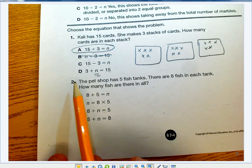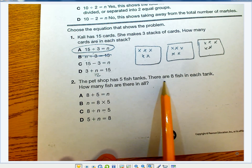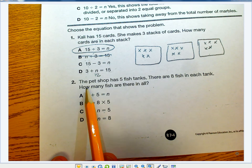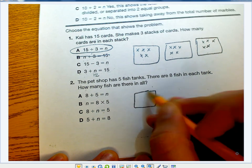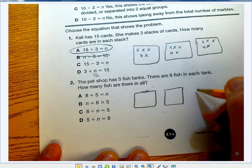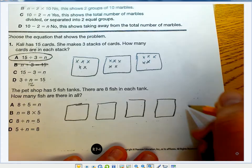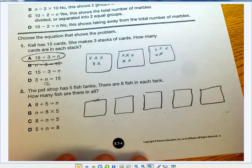Let's look at number 2. The pet shop has 5 fish tanks, there are 8 fish in each tank, how many fish are there in all? So I'm going to go ahead and draw my 5 tanks: 1, 2, 3, 4, and 5 tanks.